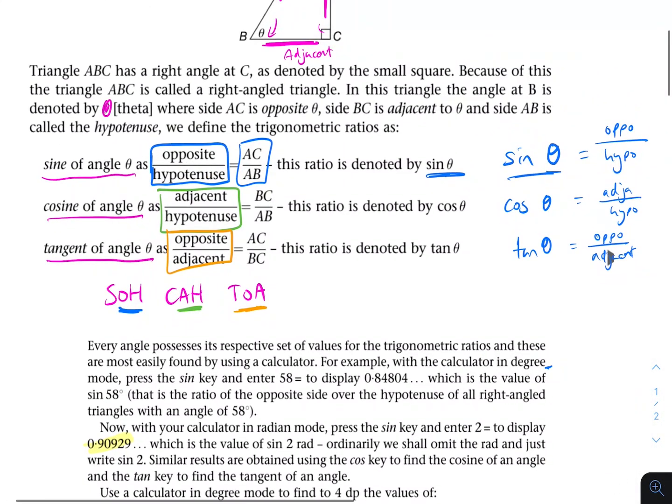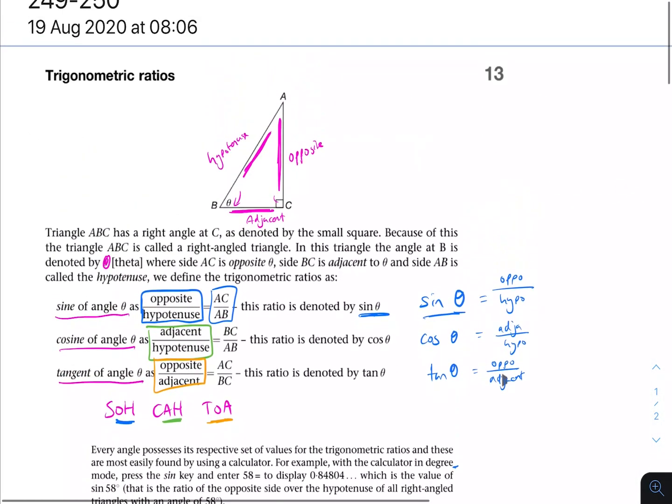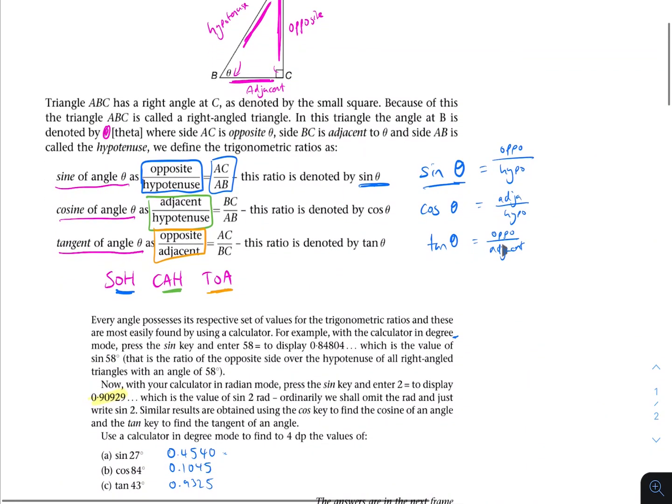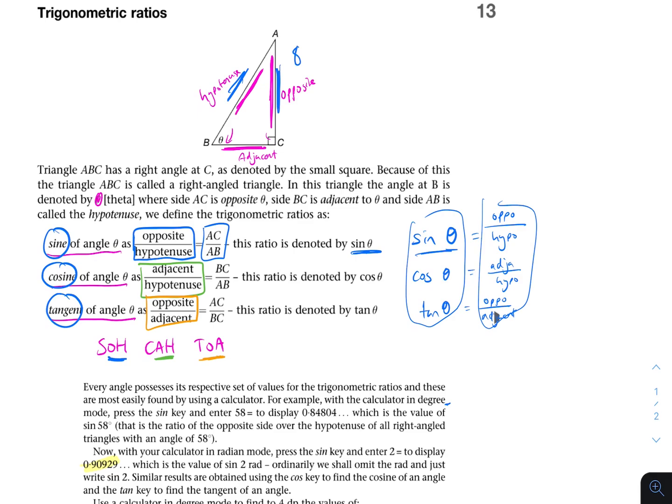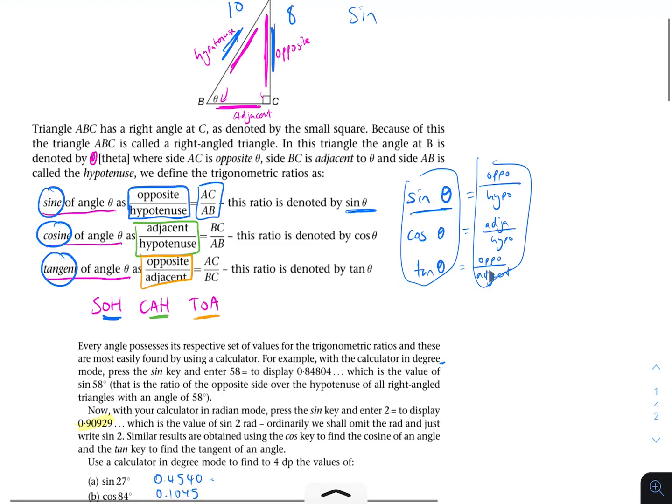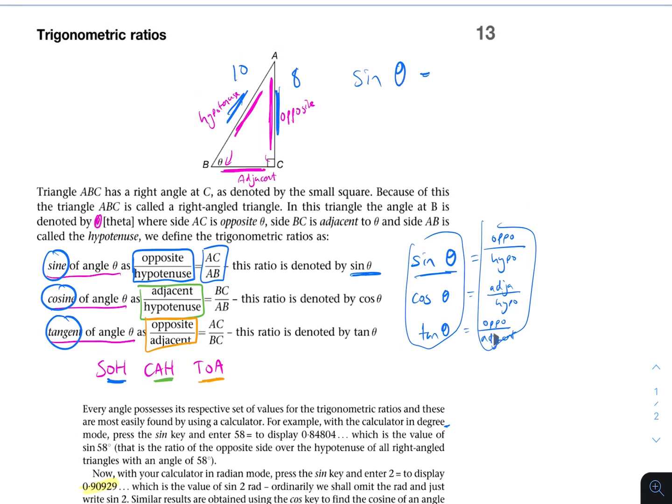So this is just a quick introduction to the trigonometric ratios. Just the important thing to remember here is that sine, cosine, and tangent, they do actually mean something because sometimes when you're just dealing with them like this, you forget that they actually are the opposite here over the hypotenuse here. So obviously, if this was, for example, 8 and this was 10, then the sine angle of theta would be 8 over 10, etc.